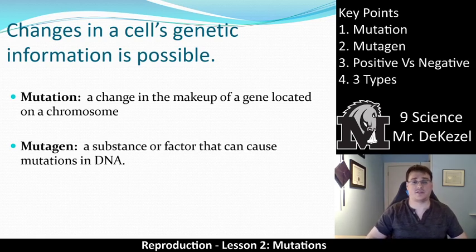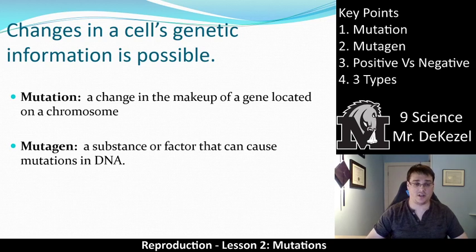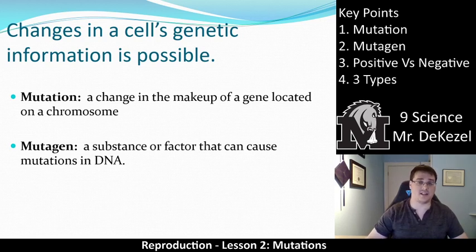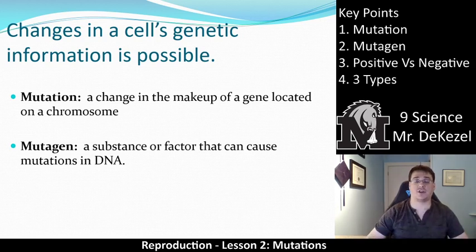When these mutations occur, it can have very drastic impacts on what the outcome is. Mutations are the change in the makeup of a gene. A mutagen is the substance or factor that causes that mutation — when there is a change, what caused it? That's a mutagen. A mutation is a change; a mutagen is the cause of that change. It could be a substance or factor.